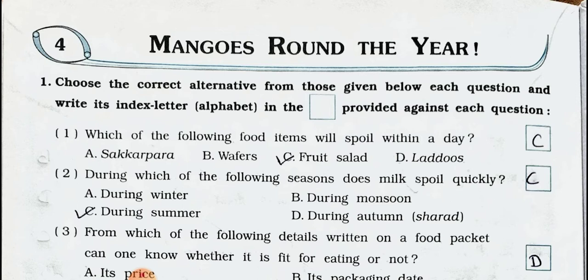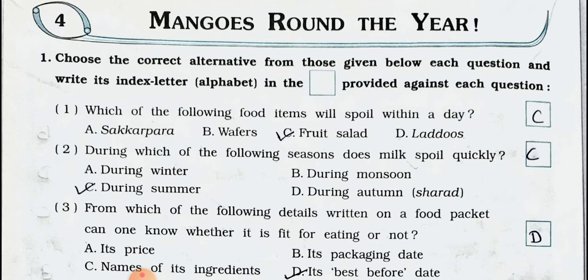In Question Number 1, choose the correct alternative from those given below each question and write its index letter in the box provided. Question 1: Which of the following food items will spoil within a day? Options: A) Sakkar para, B) Wafers, C) Fruit salad, D) Lattos.